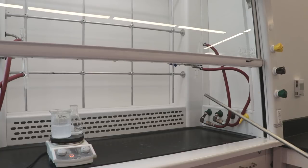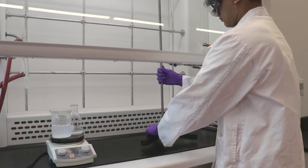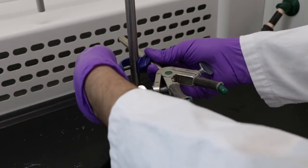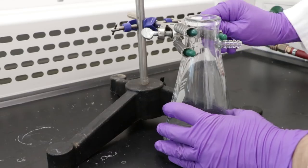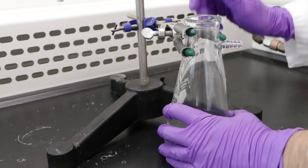To set up the vacuum filtration apparatus, carefully place a retort stand in the fume hood. Attach a three-prong clamp to the bottom of the retort stand. Attach the vacuum filtration flask and secure the clamp around it.